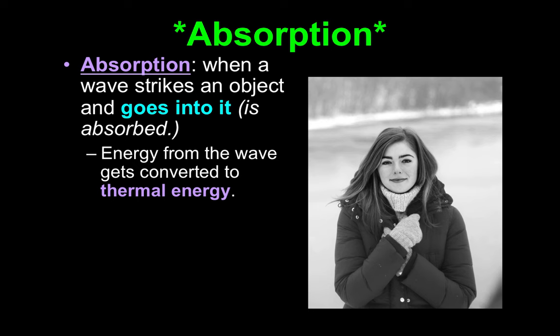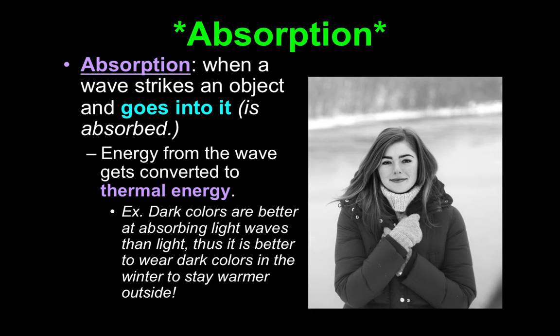Which station involved light being absorbed into an object? Do you remember the station where you held a flashlight up through paper? There was only one color that didn't go through — the black one. It was absorbed. All of the papers were absorbing some light, but black absorbs more. Dark colors are better at absorbing light waves than light colors. That's why it's better to wear dark colors in winter to stay warm, and why we wear light-colored clothes in summer — the heat isn't absorbed into them as much.